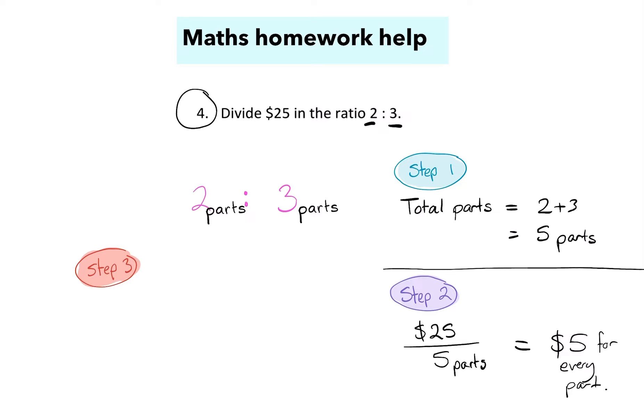So now I know how many dollars it is for every single part. Let's go back to our ratio here. If this side is supposed to be two parts and it's $5 for every single part, it's just going to be double the $5. That'll make $10.